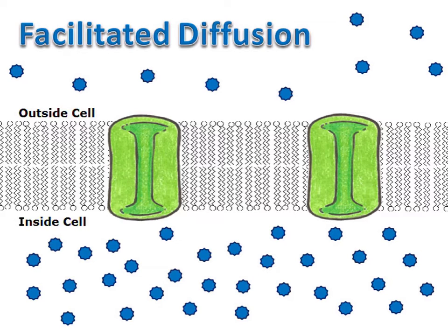Sometimes particles are either too large or they have a charge and they're unable to go directly through the membrane. When this happens, these particles have to use protein channels in order to make it through.